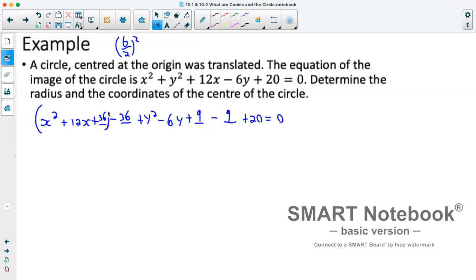What that has done is created two perfect square trinomials. So this here is a perfect square trinomial as is this. So from pre-calculus 11, you should know how to factor this. So this becomes x plus 6 squared. And then this becomes y minus 3 squared. And then combining these negative 36 minus 9 is negative 45 plus 20 is negative 25. We'll move the 25 to the other side. So we've got x plus 6 squared plus y minus 3 squared equals 25.